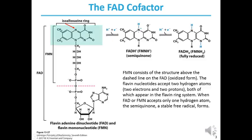Before we get into more details as to how beta-oxidation is performed, let us look at some of the key cofactors involved in these processes. The first one is the FAD cofactor. FAD stands for Flavin Adenine Dinucleotide. Flavin Adenine Dinucleotide sometimes also comes as Flavin Mononucleotide. The top one above the pink dotted line is FMN, or Flavin Mononucleotide, and the whole structure is Flavin Adenine Dinucleotide. What we will be looking at in the beta-oxidation pathway is the chemistry of the Flavin Adenine Dinucleotide cofactor.